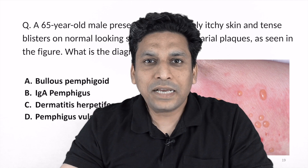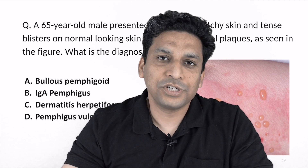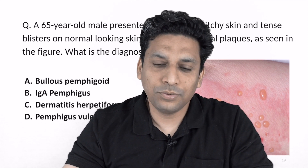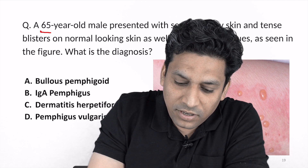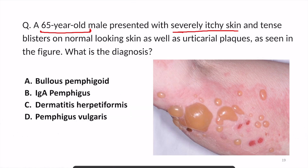Hello students, welcome back. I am back with another image-based question. A 65-year-old male presented with severe itchy skin, tense blisters on normal-looking skin, as well as urticarial plaques as seen in the figure. What is the diagnosis? The patient is having urticarial, that is itchy, urticarial plaques.